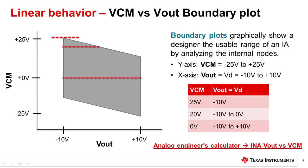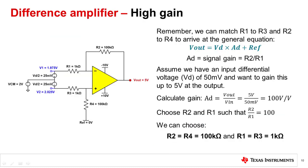You can select the IA part number, enter your specifications including supply, gain, and reference voltage, and the calculator will generate the boundary plot to guide you through linear design and operation. Up until this point, we have only seen unity gain configurations. The 1-amp IA, though, can be used to amplify really small signals. This is done by altering the resistor values.